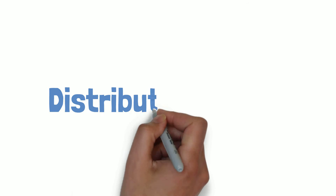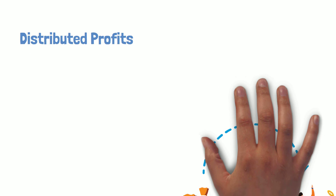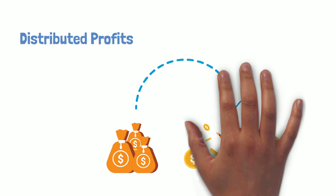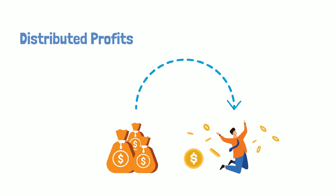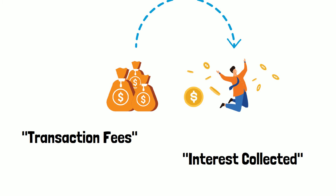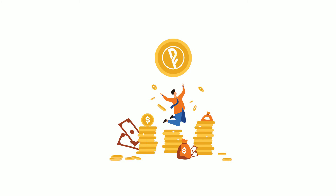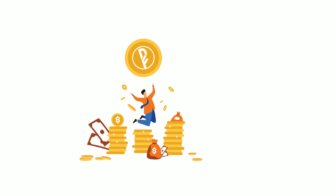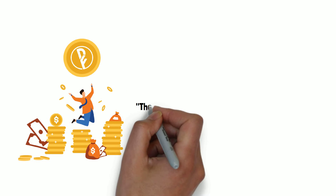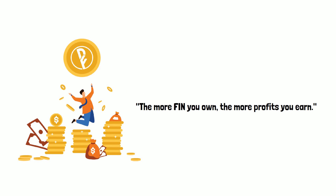First, distributed profits. Definer redistributes all profits collected on the platform back to FinToken holders, including transaction fees and interest collected. Collected profits will be distributed proportionally according to your Fin holding ratio. The more Fin you own, the more profits you earn.